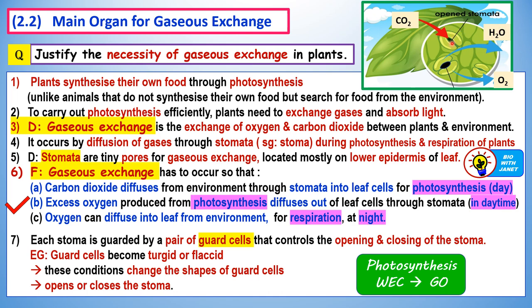At night, when there's no photosynthesis, oxygen needs to diffuse into the leaf from the atmosphere for respiration, because respiration requires oxygen. This explains the necessity for gaseous exchange to occur in plants and answers why plants must exchange gases.